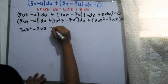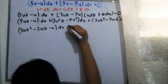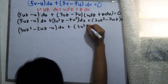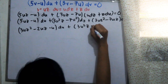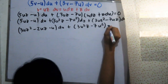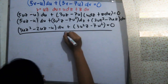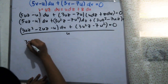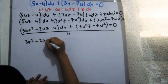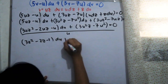Now we simplify. We have negative 7uz on one side and 5uz on the other, so subtracting gives negative 2uz. After simplifying, we divide everything by u, arriving at 3uz minus 2uz minus 1 multiplied by du, plus 3uz minus z7 multiplied by u dz.